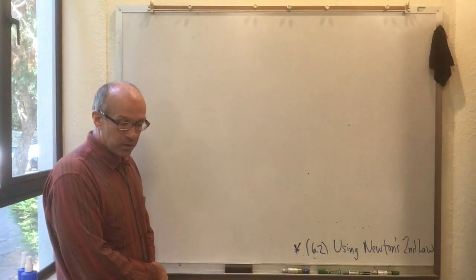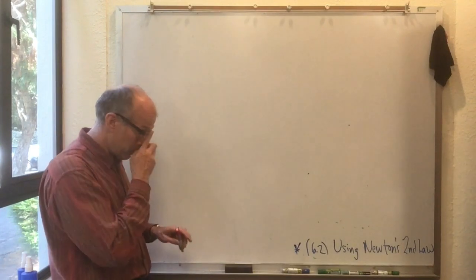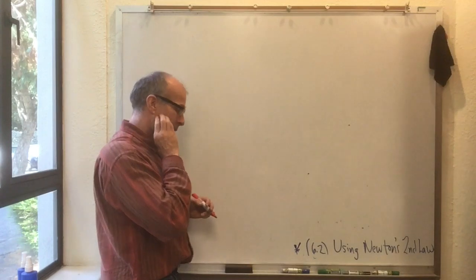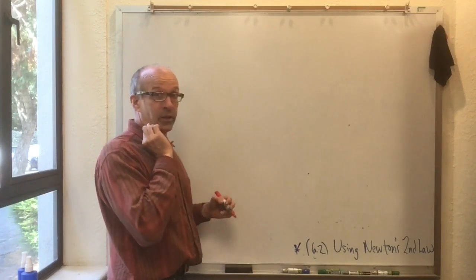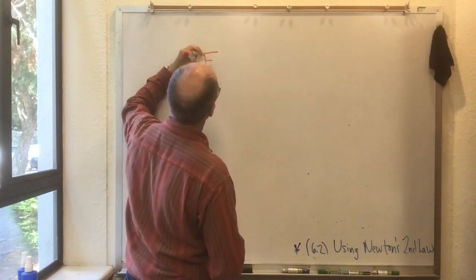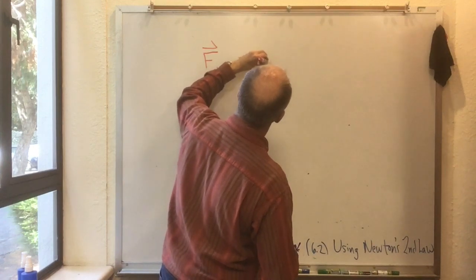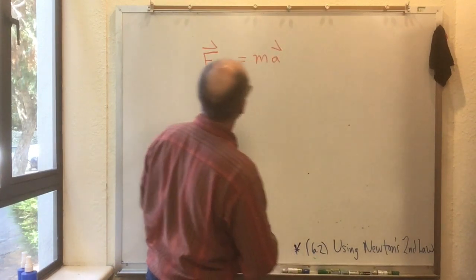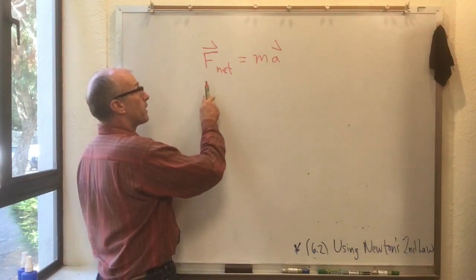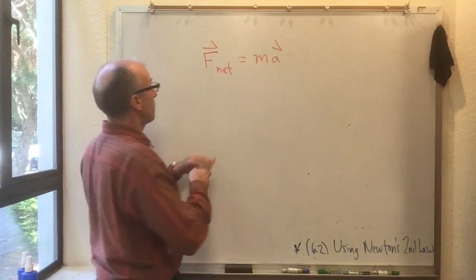So the next topic of this lecture is using Newton's second law. We're gonna really get down to brass tacks now because we've been trying to gain some conceptual understanding of Newton's second law but now we just need to solve it in a bunch of different situations. And Newton's second law was that F net equals ma. Now this is a vector equation.